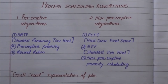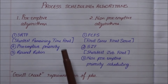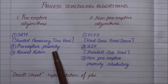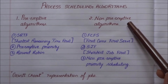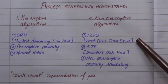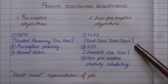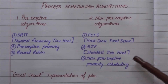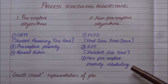Preemptive algorithms include SRTF — that is Shortest Remaining Time First — secondly preemptive priority, and third round-robin. Non-preemptive algorithms include FCFS — that is First-Come-First-Served — secondly SJF, Shortest Job First, and third non-preemptive priority scheduling.